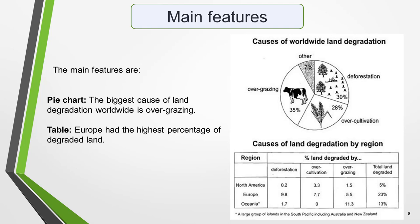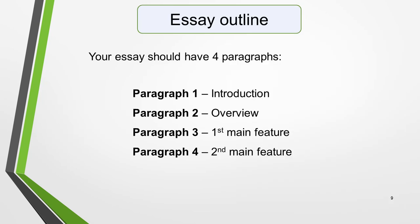So what main features stand out in each of the graphics in our practice question? Here are the pie chart and table again. The main feature for the pie chart is: the biggest cause of land degradation worldwide is overgrazing. And the main feature of the table is that Europe has the highest percentage of degraded land. We're now ready to begin writing our essay.